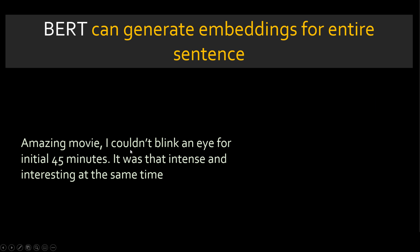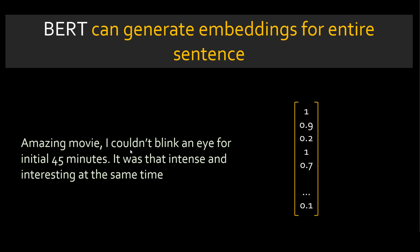BERT can also generate an embedding for an entire sentence. For example, if you're working on a movie review classification task, BERT can generate a single vector for the whole sentence. Usually, BERT will generate a vector of size 768 — that's just the dimension they chose, but it represents the full meaning of the sentence.